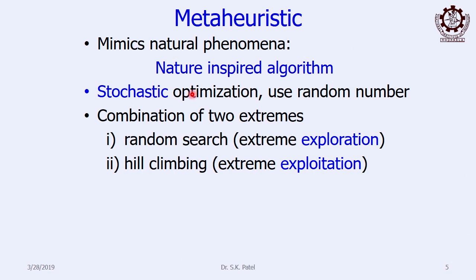Whereas the numerical methods we discussed previously will always give you the same solution no matter how many times you run them, meta-heuristics give you different solutions at different runs. That is why in meta-heuristics you should never be satisfied with only one run. You have to run it a hundred times or some particular number of times, and then find out the average or the most minimum or maximum accordingly.